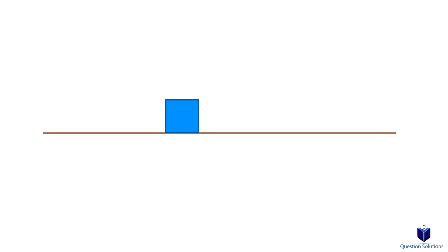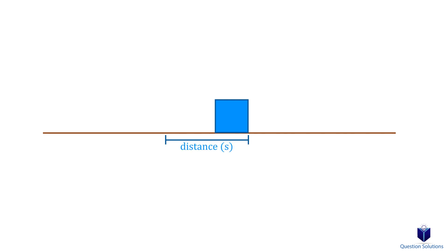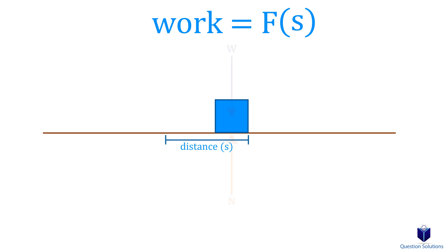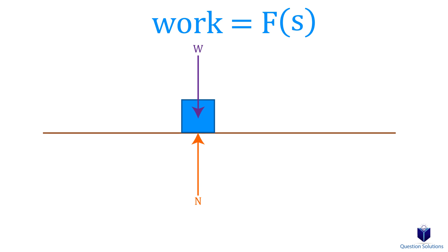Let's say there is a box. We know from equations of motion that there will be a normal force and weight. Let's say there is a 200 newton force that we apply. The box will move to the right, so the work done is the force multiplied by the distance the box traveled. The weight and normal force don't do any work because the box is only moving in the horizontal direction.